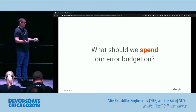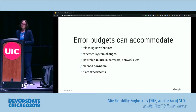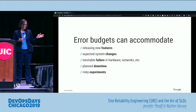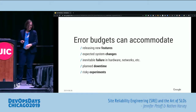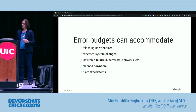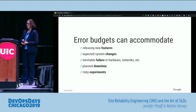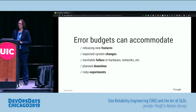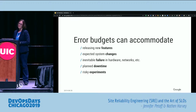What if you have a lot of budget left? Error budgets can accommodate a bunch of different things: releasing new features, dealing with expected system changes, inevitable failure — think Murphy's Law. We already talked about how 100% is never the right target, so you can accommodate inevitable failure in hardware, networks, et cetera. Planned downtime or even risky experiments you might want to try. Having budget left over is a signal that, as an organization, we aren't moving fast enough. If we aren't moving fast enough, we aren't getting that feedback loop as tight as possible, and we're potentially missing learning opportunities from our customers and our systems.